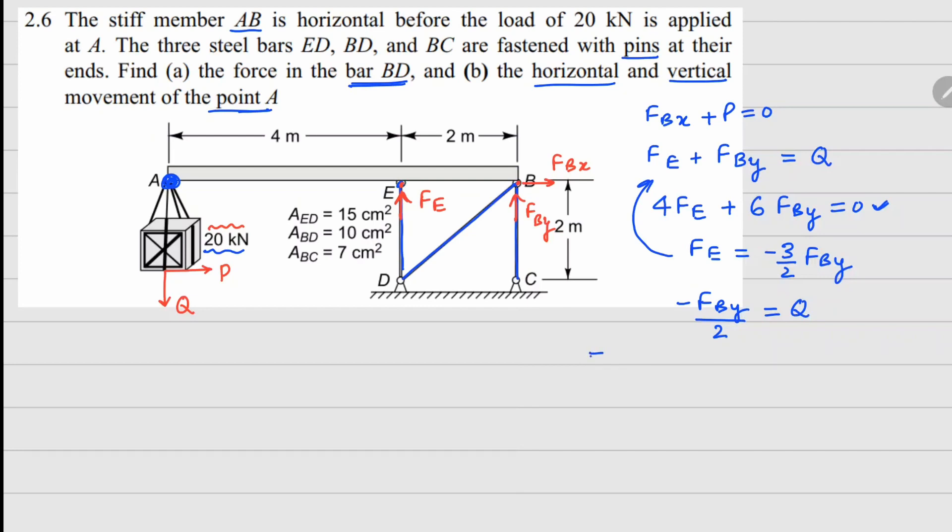This gives us FBy equals minus 2Q. If I use this relationship, my Fe comes out to be plus 3Q, and FBx from this relationship is already known, which is FBx equals minus P.